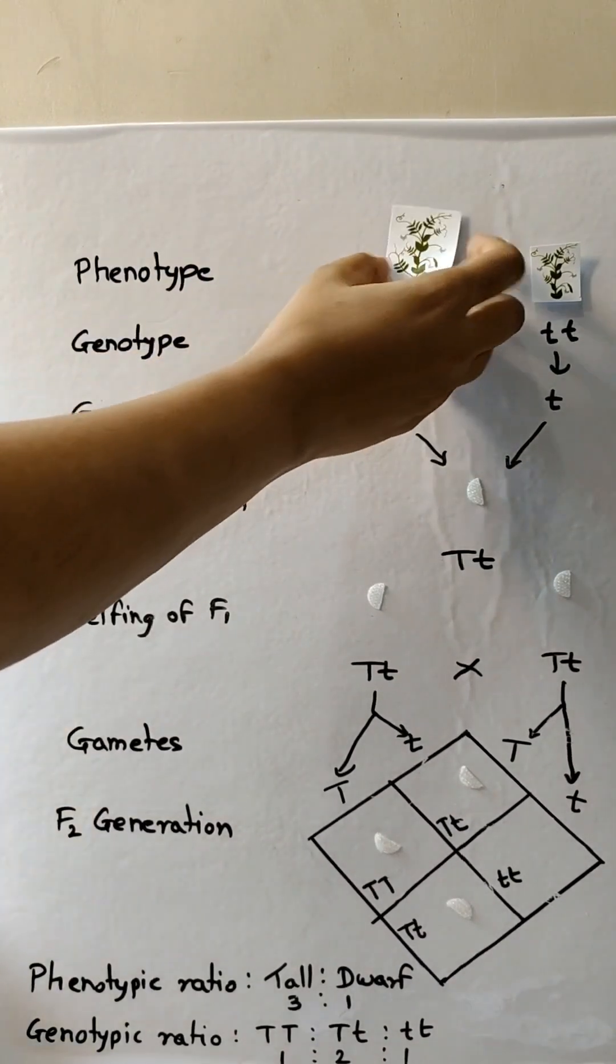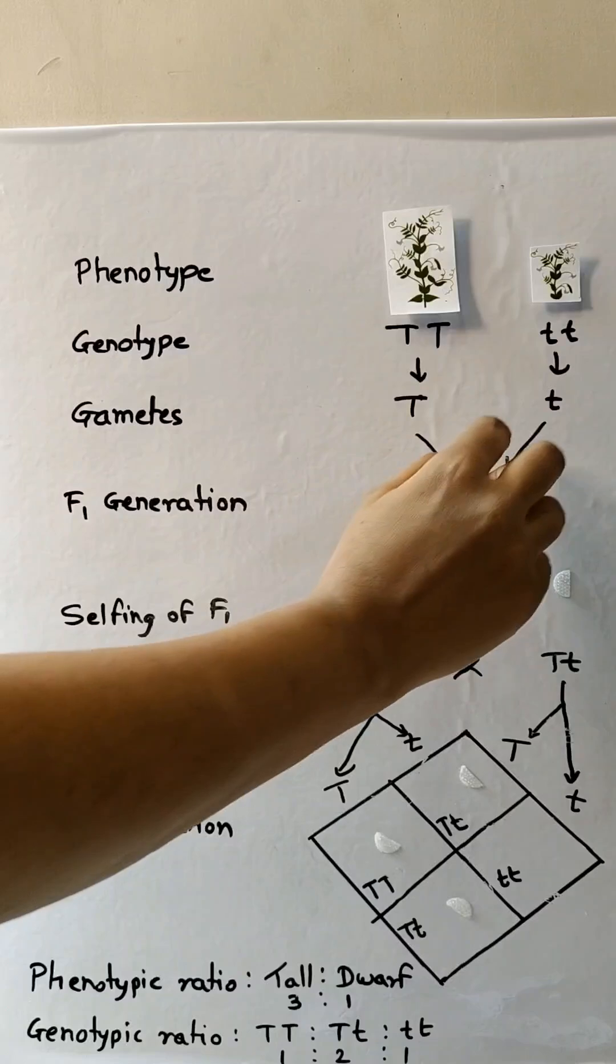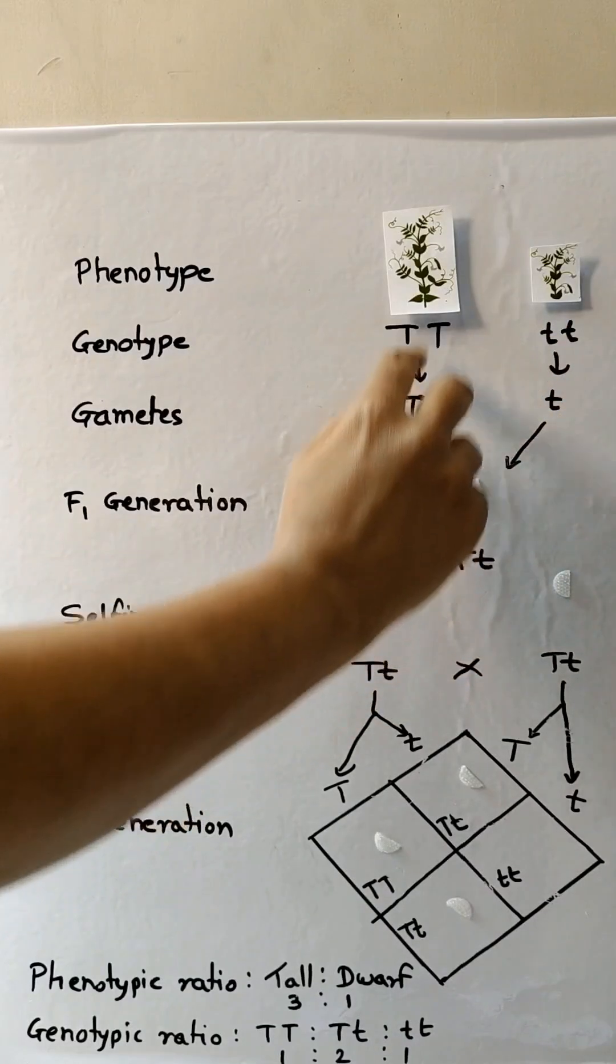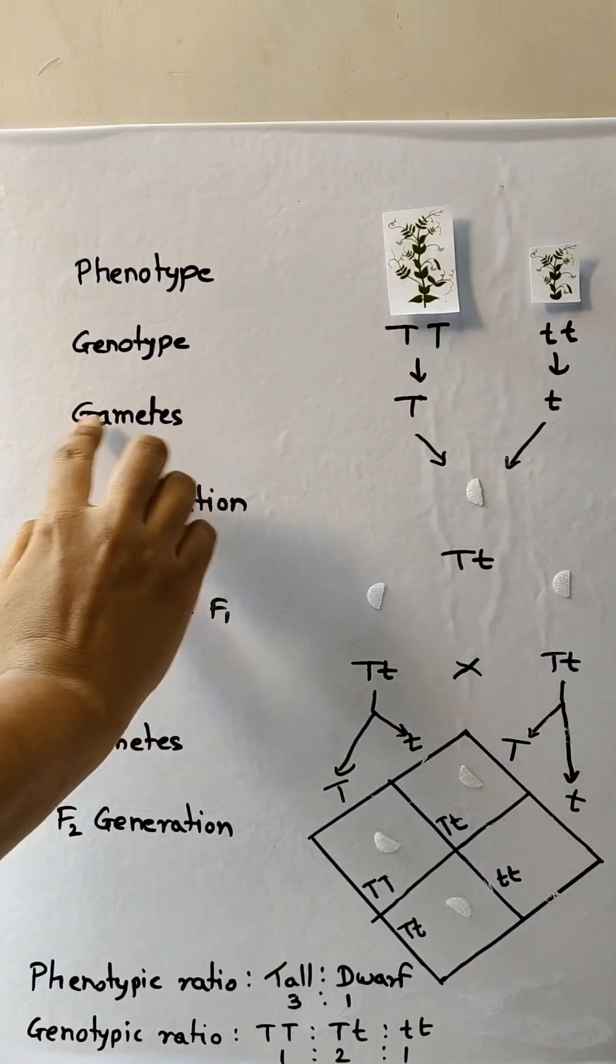You can see phenotype in the picture, and that is the observable trait. And genotype, here you can see tall plant is capital T, capital T, and dwarf is small t, small t.